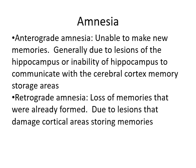Amnesia comes in two types: anterograde amnesia is the inability to make new memories, usually due to lesions of the hippocampus — especially the dominant left hippocampus — which loses the ability to communicate through its outflow tracts to cortical storage areas. Retrograde amnesia is the loss of already-formed memories, due to lesions of the cortical areas where those memories are stored, whether from stroke, tumor, trauma, or degenerative disorders such as Alzheimer's disease.